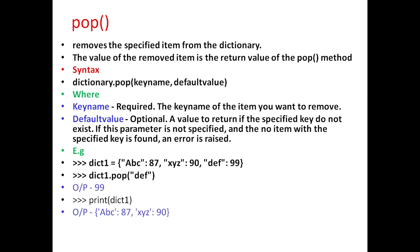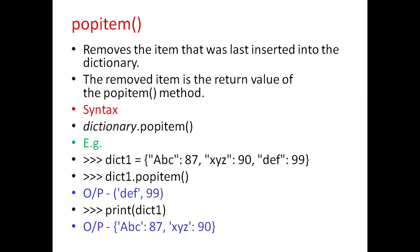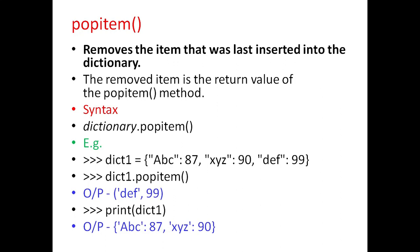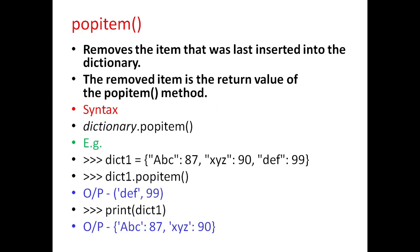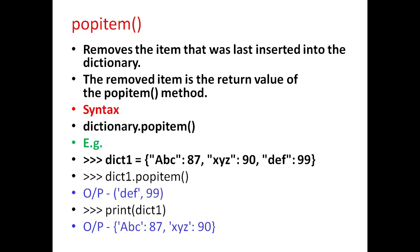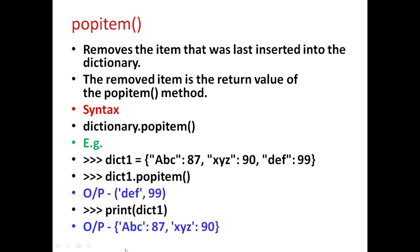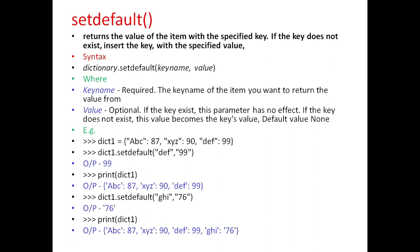For example, if dictionary dict1 is defined with these keys and values and if we give the command dict1.pop('def'), it will display the output, and when we print dict1 again it will display keys and values abc and xyz since 'def' is removed. Next is popitem. This method removes the item that was last inserted into the dictionary. For example, if we give dict1.popitem it will give the output ('def', 99) since 'def' is the last inserted item, and when we print the dictionary again it will show abc and xyz.